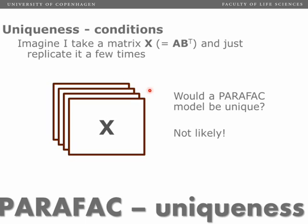Now imagine that I just take this matrix and replicate it many times. I get a three-way array with identical frontal slabs. If I build a PARAFAC model on this, it's not going to be unique. If it was, then actually PCA would be unique. So naturally there are some conditions for when we can expect uniqueness.